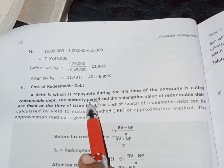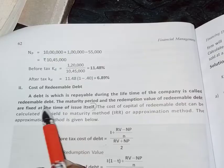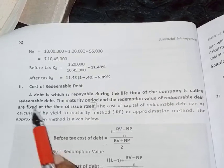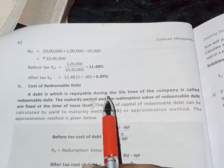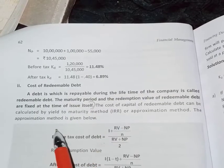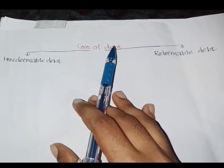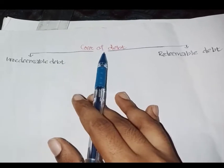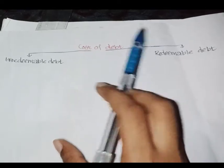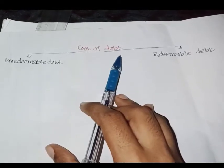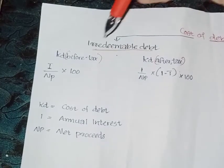Redeemable debt has a maturity period, redemption value, etc. It is for a specified period — if you have 5 or 10 years, you will have to mention that period. We have the equation for the cost of debt and for redeemable debt — there is an equation before tax and after tax.